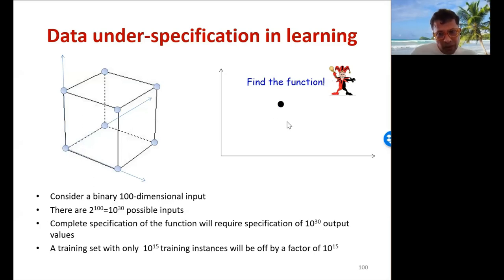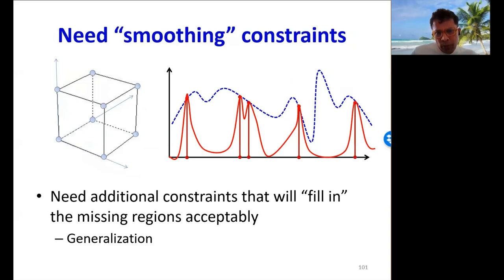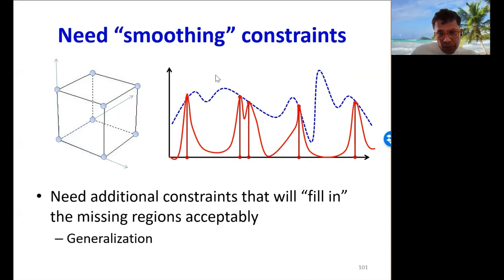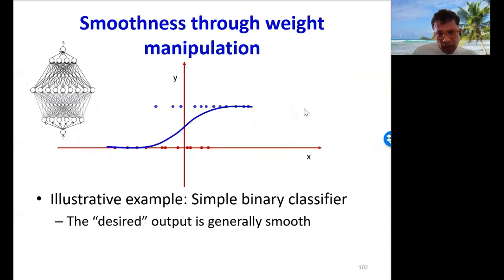So we need additional constraints on the model that will force it to fill in the missing regions of the input space in a reasonable way. Basically, we need constraints that will make the model generalize better in regions of the input space where we have not seen training data. To illustrate the why and how of these constraints, consider the case of a simple binary classifier working on a scalar input with a sigmoid activation at the output.